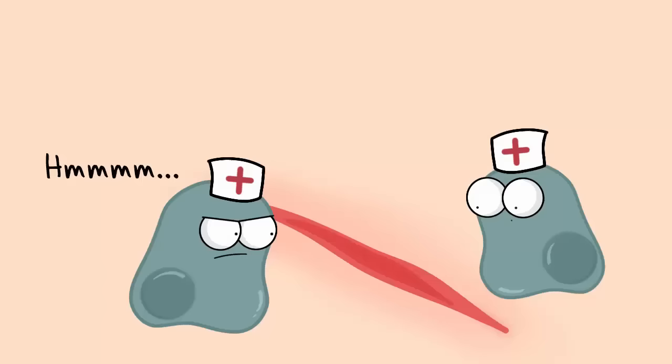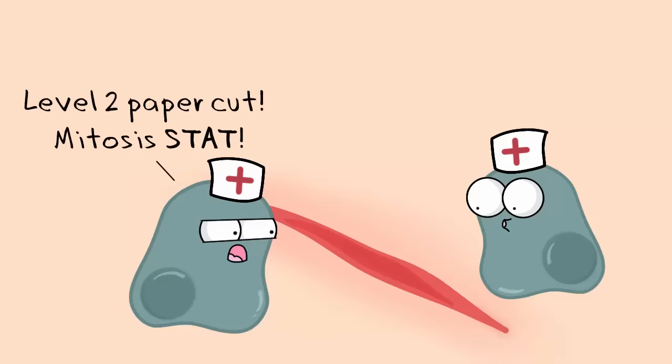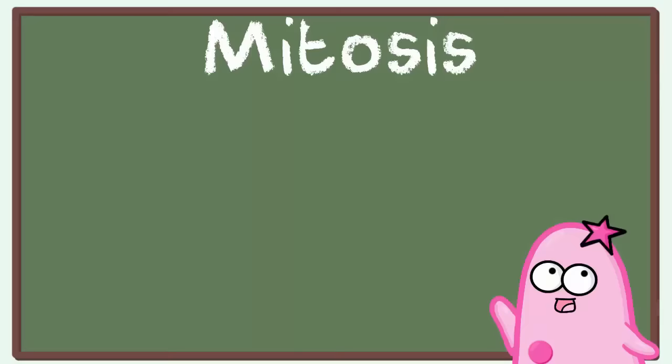Mitosis also is great for repair of damage. If you have some kind of accident like when we were talking about that cut on your arm or leg, well you want to make sure it gets repaired. So you have to make more cells to do that. Mitosis is great for that.